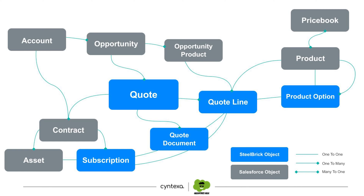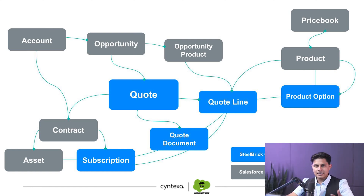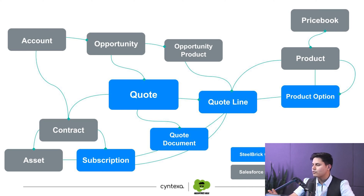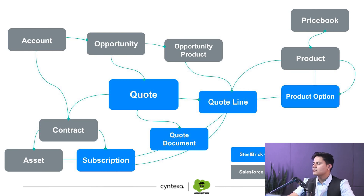All the blue things shown here are the SteelBrick objects, and all the gray objects are the Salesforce native Sales Cloud platform objects. Whenever you get the license of Salesforce CPQ and add it on top of the Salesforce platform you're using, these are the additional objects you get to manage your CPQ process. There is Quote, Quote Document, and Quote Line, and you pick all of those things from Products and the pricing from Price Books, and from bundles, Product Options, and everything.